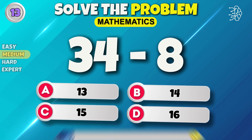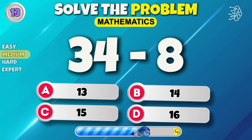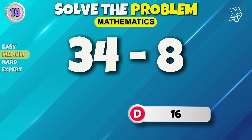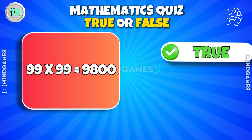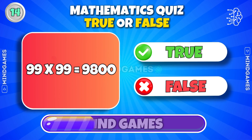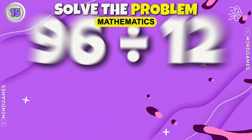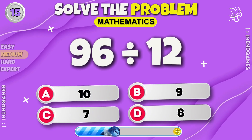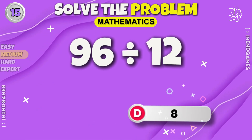Round 13. 16 is the correct answer. 99 into 99 is equal to 9,800 — true or false? It's false. The correct answer is 9,801. Any guesses? 8 is the correct answer.